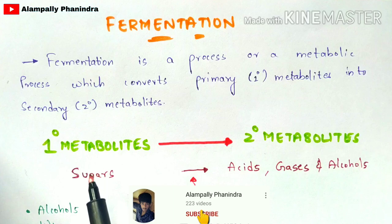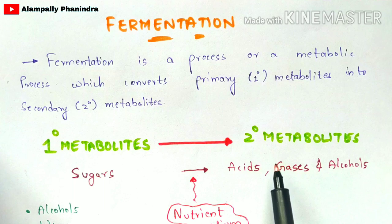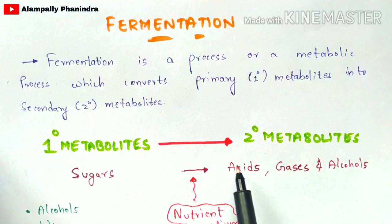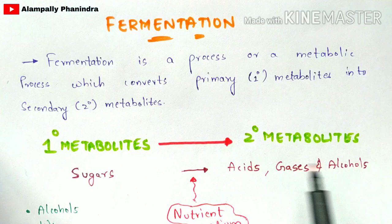The primary metabolites include sugars, which are carbohydrates. These sugars get converted into acids, gases, and alcohols. Acids include citric acid, glutamic acid, and other organic acids. Gases include methane, which is mainly used for household purposes, and alcohols include beer and wine.